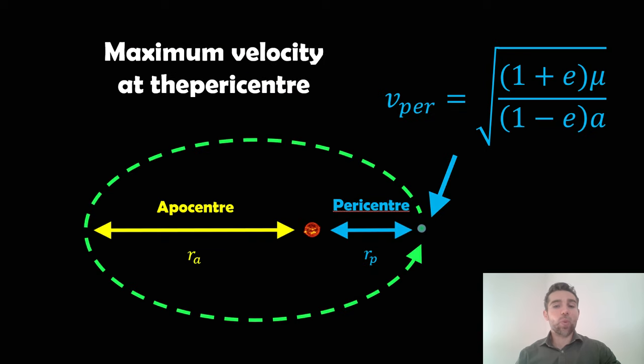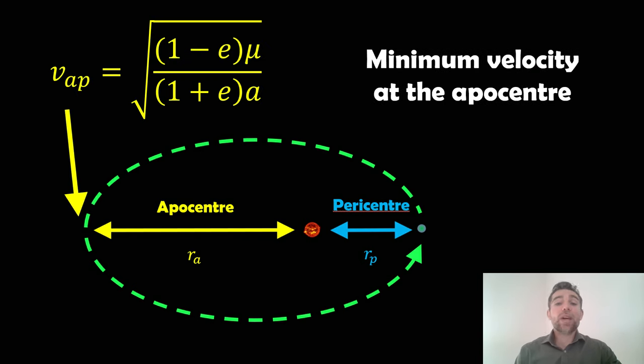Once we know that, we've got e, we know what mu would be, the standard gravitational parameter. We know what a would be, which is the semi-major axis. And with e, we can calculate the pericentre or the maximum velocity on that orbit. That would be given by this equation at the top right there. We can also do the same for the apocentre. That would be the minimum velocity.